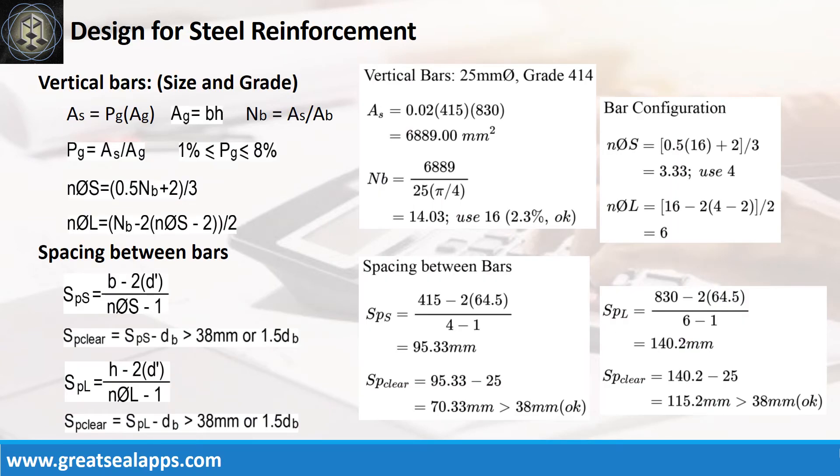Given steel ratio equals 2%, assumed column width equals 415 mm and assumed column length equals 830 mm, the area of steel is 6,889 square millimeters and the number of vertical bars for 25 mm bar is 16 with 4 bars along short side and spacing between bars at 95.33 mm and 6 bars along long side with spacing between bars at 140.2 mm.